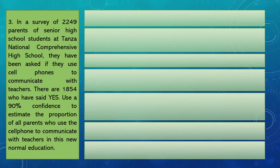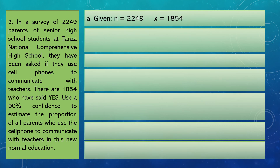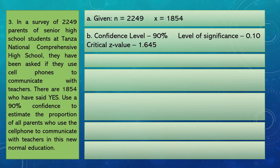Let's proceed with number three. In a survey of 2,249 parents of senior high school students at Anza National Comprehensive High School, they were asked if they use cell phones to communicate with teachers. There are 1,854 who said yes. Use a 90% confidence interval to estimate the proportion of all parents who use cell phones to communicate with teachers. So N equals 2,249, X equals 1,854, and the confidence level is 90%, giving a level of significance of 0.10.